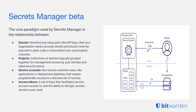A very new and exciting feature we've released is the Secrets Manager beta. The core paradigm of Secrets Manager is the relationship between secrets, projects, service accounts, and access tokens. Secrets are sensitive values like API keys and SSH keys — you want to store those securely and they should never be exposed in plain text or transmitted over unencrypted channels. Projects are collections of secrets logically grouped together for easy management by your DevOps and CyberSec teams. Service accounts allow applications or development pipelines that require programmatic access to a discrete set of secrets. And access tokens are a set of keys that facilitate service account access and the ability to decrypt those secrets stored in your vault.